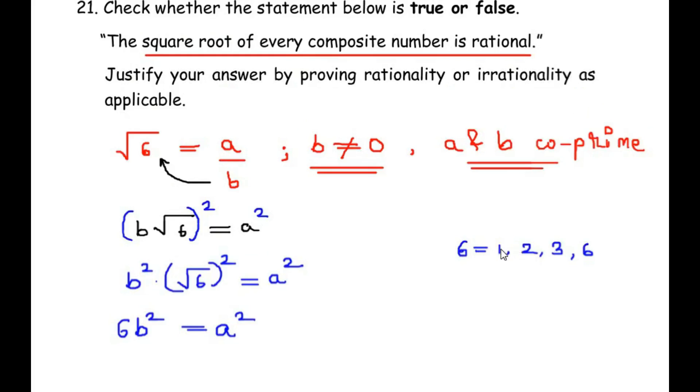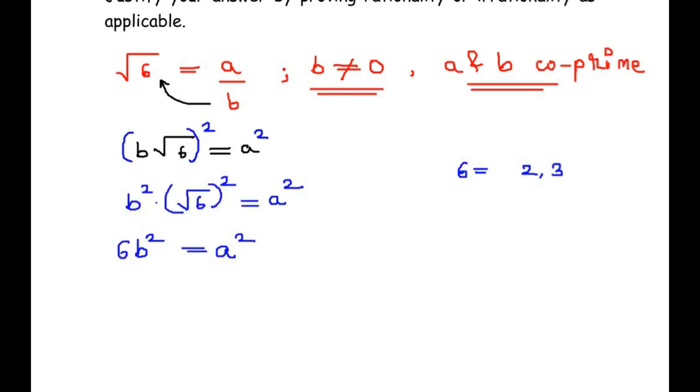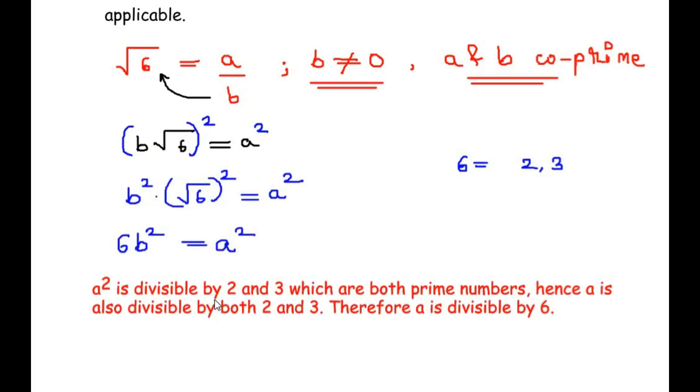Let us consider the factors 2 and 3. If 6 is able to divide a squared, then its prime factors 2 and 3 also should be able to divide a squared. So a squared is divisible by 2 and 3, which are both prime numbers. Hence a is also divisible by both 2 and 3. Therefore, a is divisible by 6.